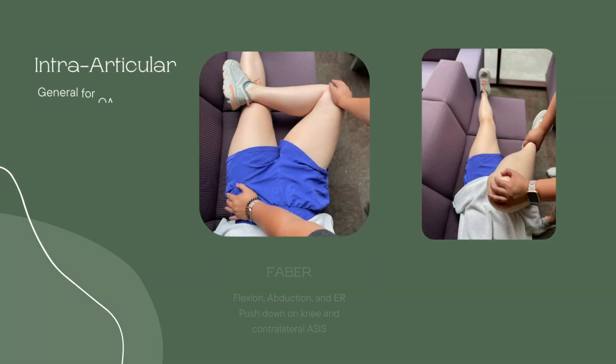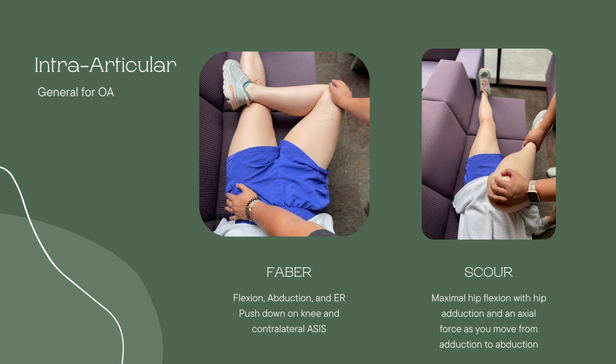Starting us off, intraarticular general tests for OA are going to be Faber and Scour. These are general tests to tell us if there is intraarticular pathology. For Faber, the positive test would be reproduction of pain or asymmetry in range of motion when comparing bilaterally.